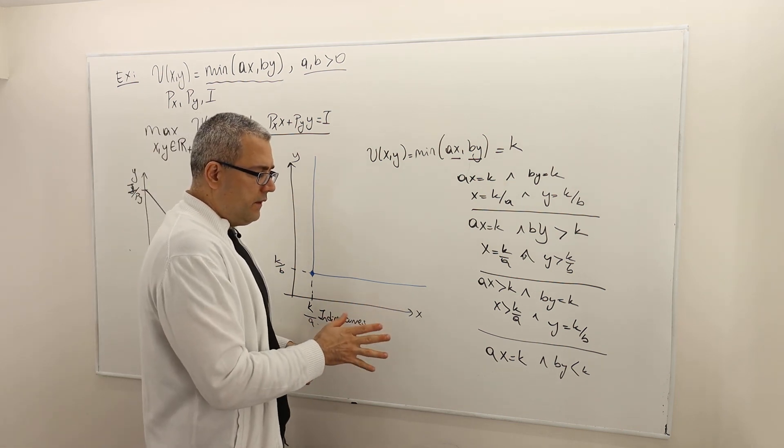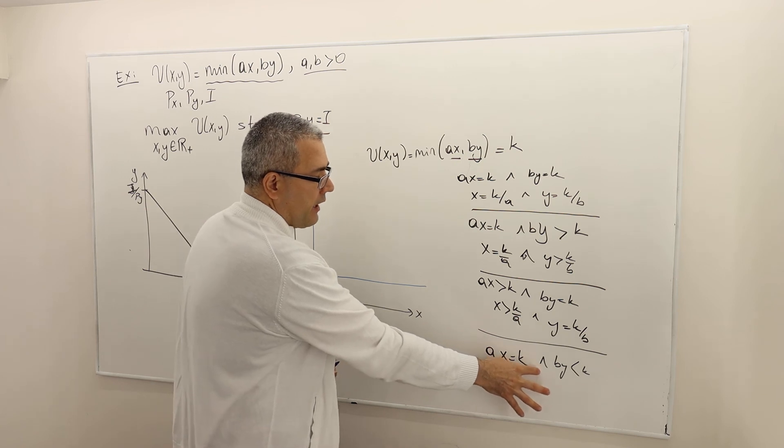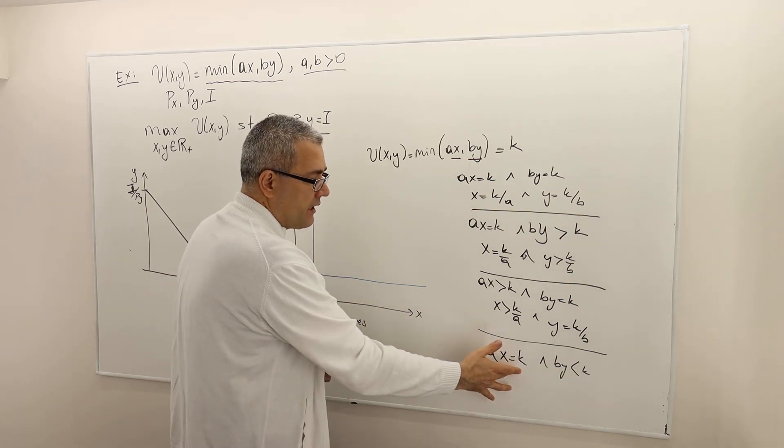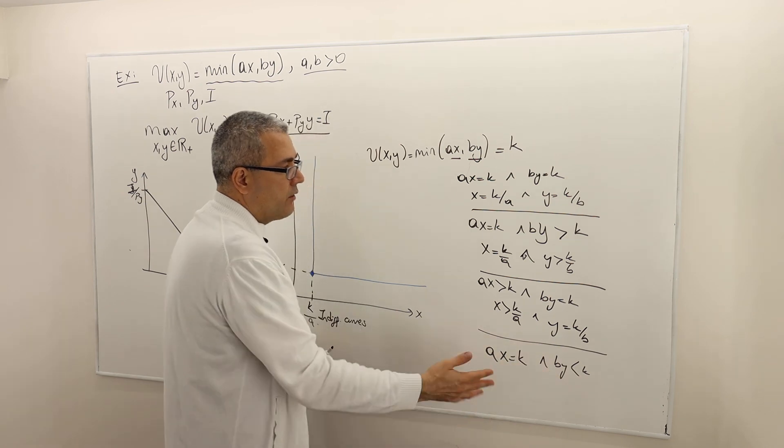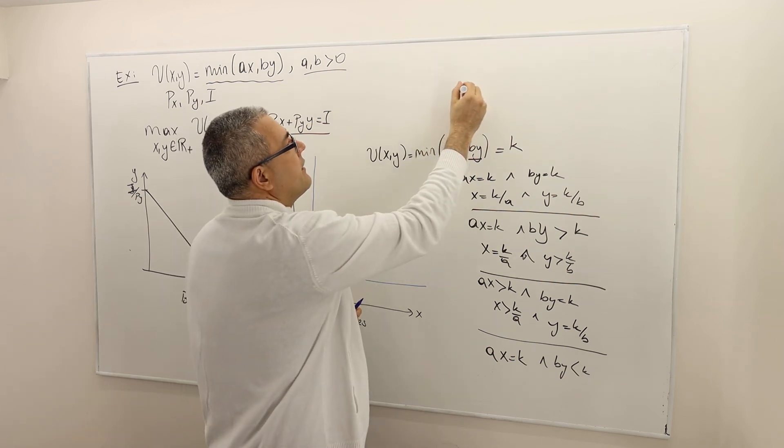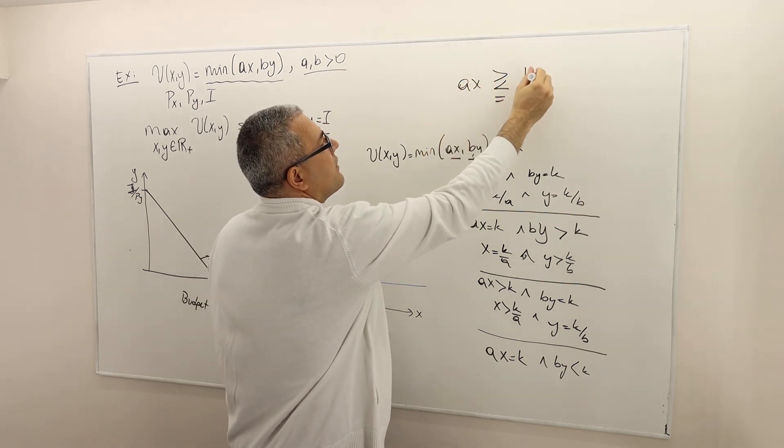All right, so if we need to look at the other cases like AX is equal to K and BY is less than K, or the symmetric version AX is less than K and BY is equal to K, basically I am comparing this term with this term. That's the entire strategy here.